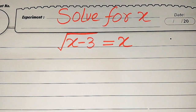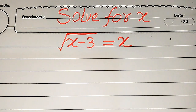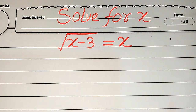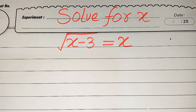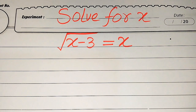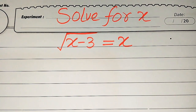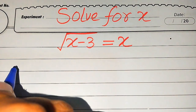Hello everyone. How to solve this problem for the values of X if we have X minus 3 under square root equals X. We solve this problem for all the values of X, finding all the roots of this equation. If you have any other method in mind, please write it in the comment section. Now we move towards the solution of this problem.